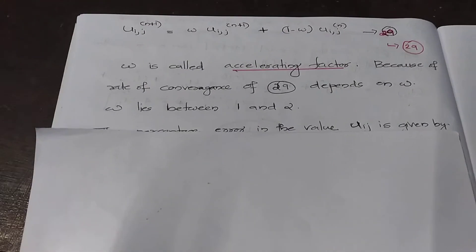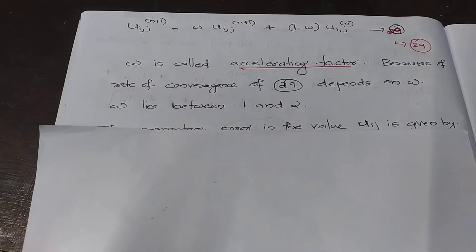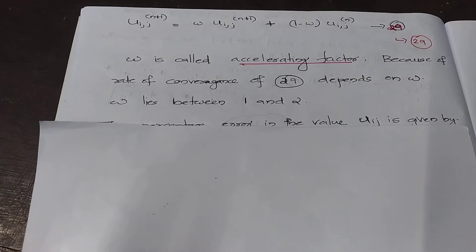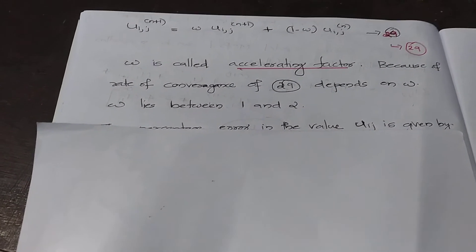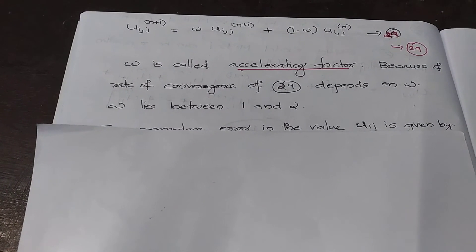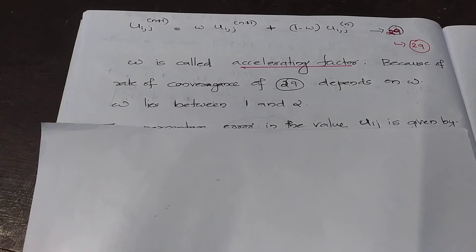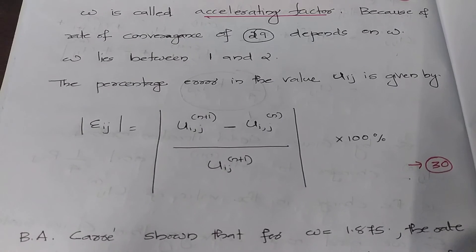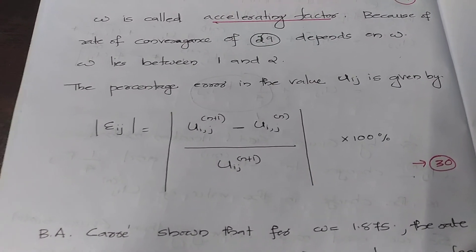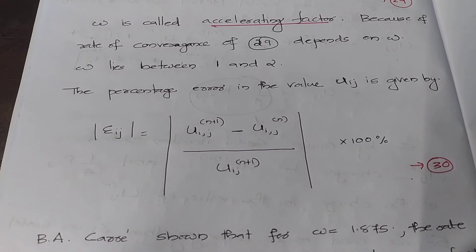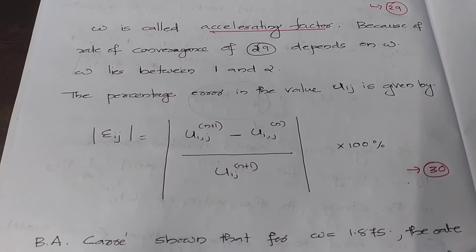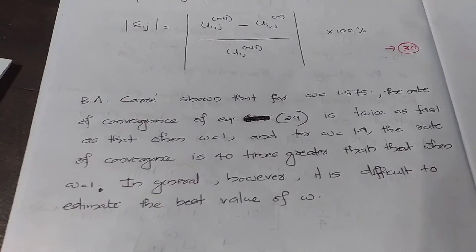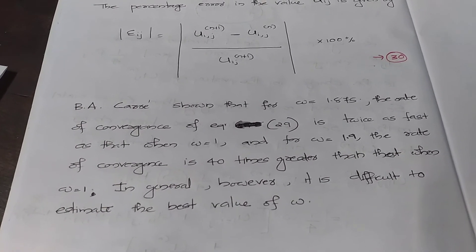Omega is called the accelerating factor because the rate of convergence of equation 29 depends on omega. In the SOR method, the rate of convergence depends only on omega, which lies between 1 and 2. Omega determines the convergence and accuracy of the numerical method. The percentage error in u(i,j) is given by the modulus of [u(i,j)^(n+1) - u(i,j)^n] divided by u(i,j)^(n+1), multiplied by 100, as equation number 30.